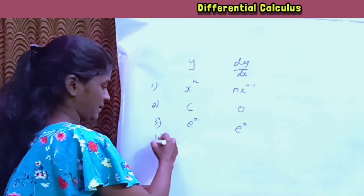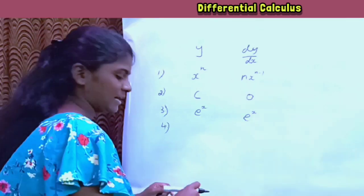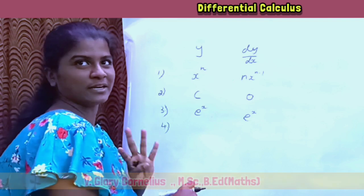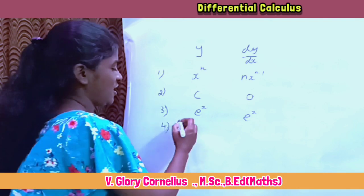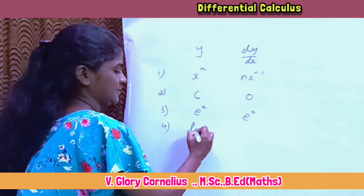Next, the fourth formula: log x. The differentiation of log x gives us 1 by x.